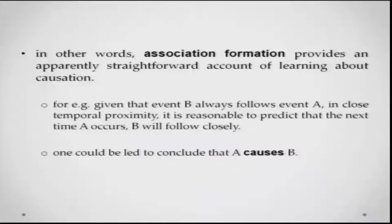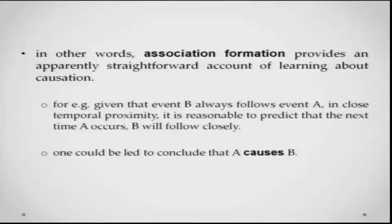Learning then depends on the ability to register this co-variation of stimuli and their corresponding responses. This is a practical and supposedly scientific way of explaining behavior, but certainly there are some problems with it. Association formation provides an apparently straightforward account of learning about causation. For example, if event B is always following event A in close temporal proximity, it might be reasonable to predict that A causes B. Whenever A occurs, B will follow closely, and in that sense A is causing B to happen. For example, you are taking an aspirin and your headache is going away — if it is happening 100 percent of the time, you might believe that the effect of the aspirin is the going away of your headache. That is a rather simple model, but we will see that the story is slightly more complex.